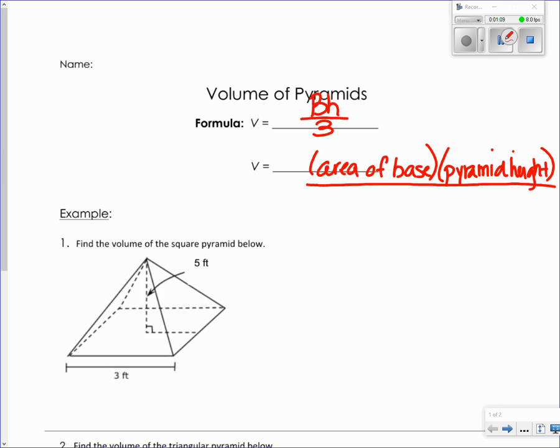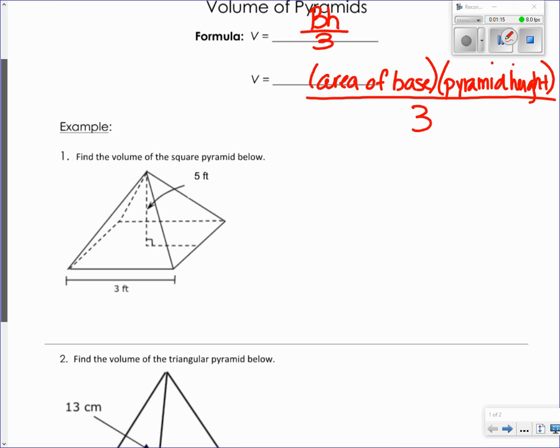And then I'm going to put all of that divided by three. Okay, so let's look at example number one. It says find the volume of the square pyramid, so I'm going to start with my formula. I know it's big BH divided by three.